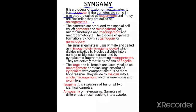The gametes are produced by a special cell called a gametocyte, and those are microgametes or macrogametes. The process of gamete formation is known as gamogony or gametogony. The smaller gamete is usually male and is called the microgamete or microgametocyte, which divides mitotically. The nucleus divides into a number of bits surrounded by cytoplasm fragments, forming the microgametes, which are actively motile by means of flagella.